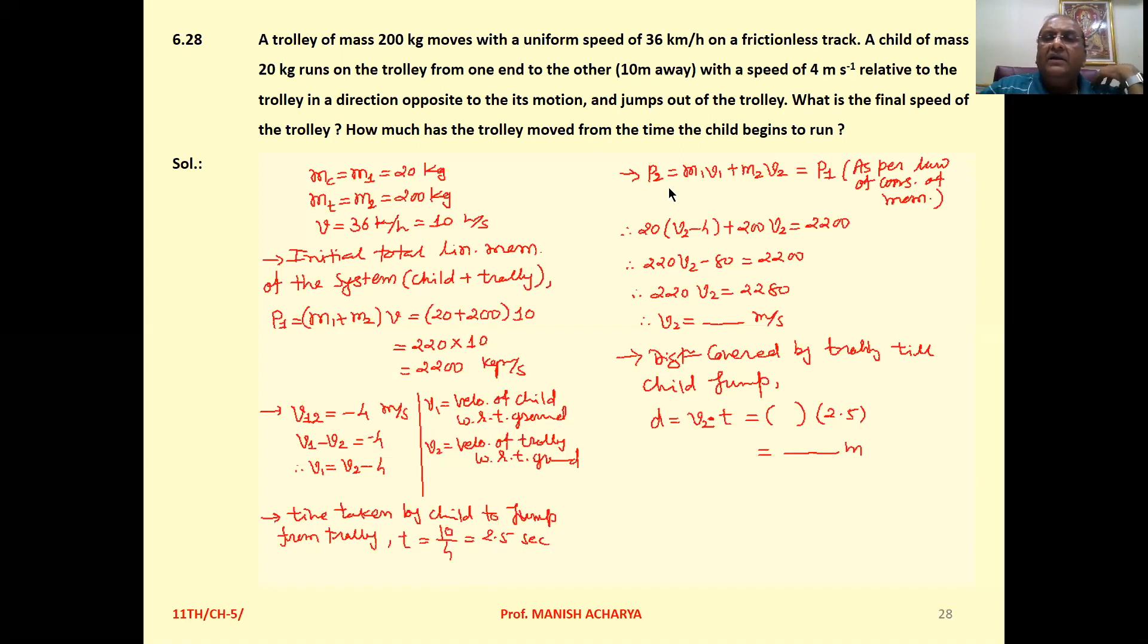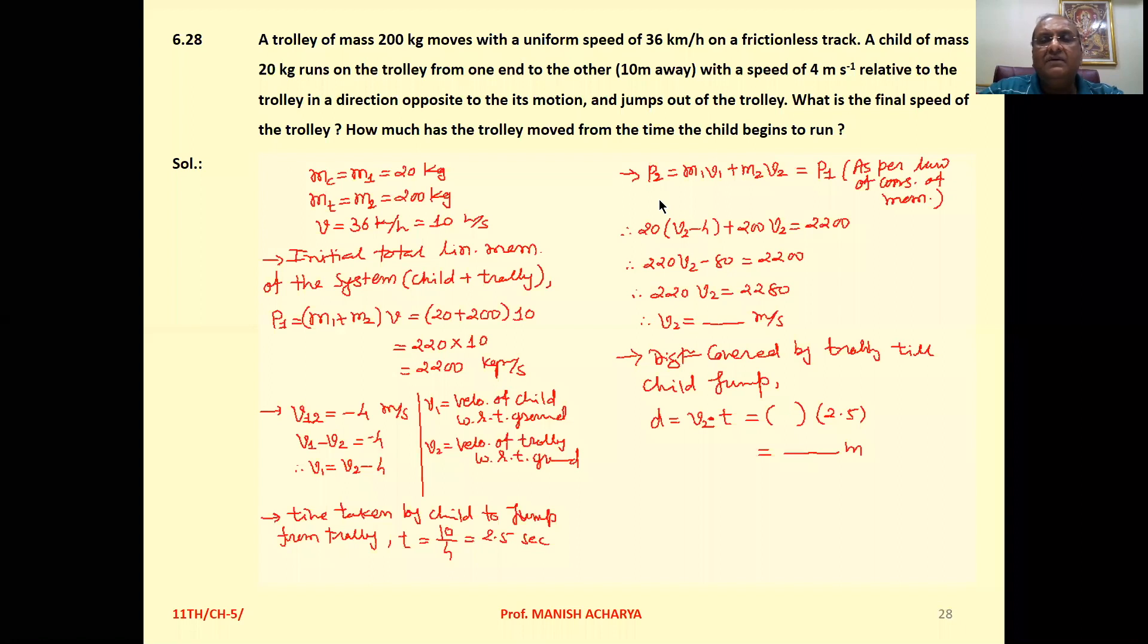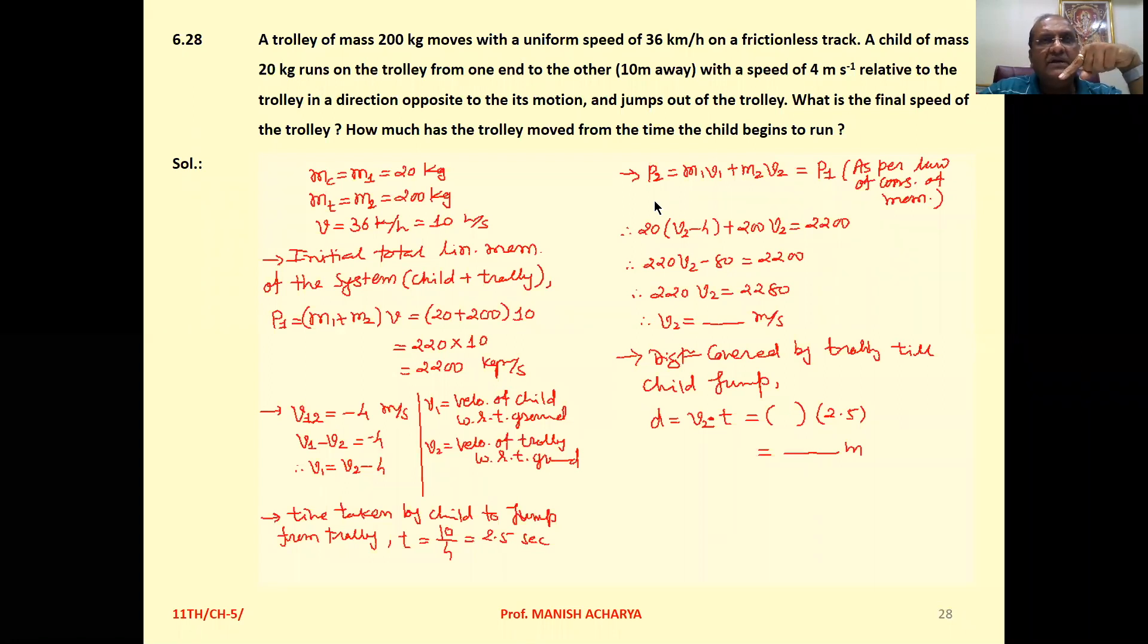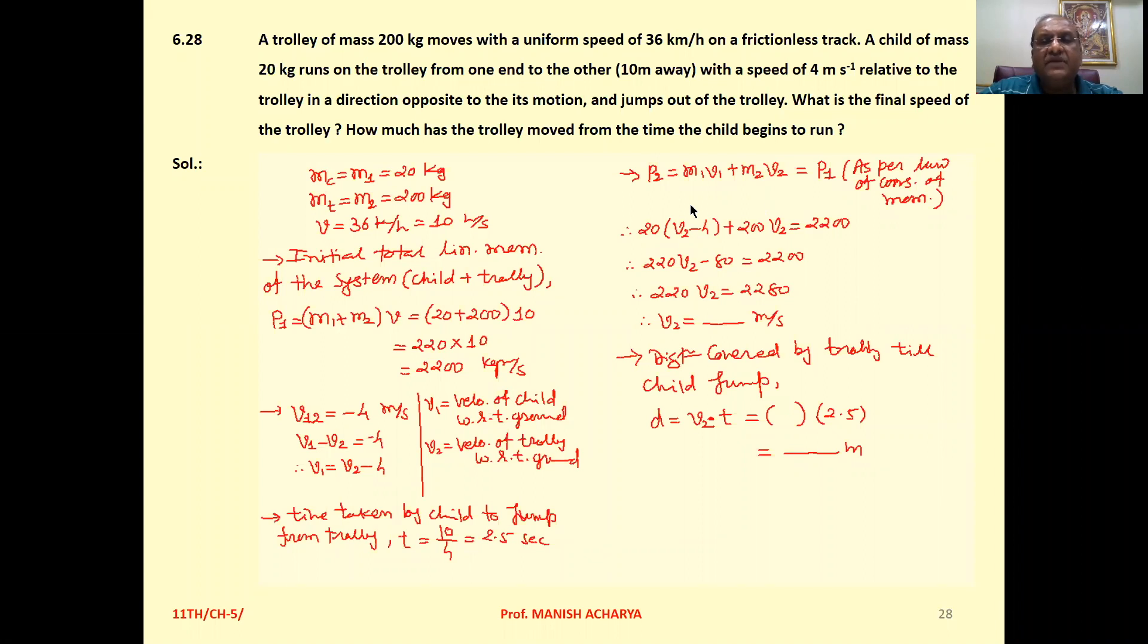By the law of conservation of momentum, the initial total linear momentum and final total linear momentum of the system remain the same. So P2, the final momentum, is M1×V1 + M2×V2 = P1.